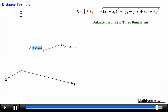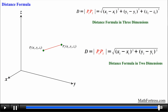The distance formula in three dimensions between point 1 with coordinates x1, y1, z1, and point 2 with coordinates x2, y2, z2 resembles its two-dimensional counterpart — the only difference is the inclusion of the extra variable z, because we are dealing with a three-dimensional coordinate system. In our next video, we will go over examples using this new formula and also derive the equation of a sphere.